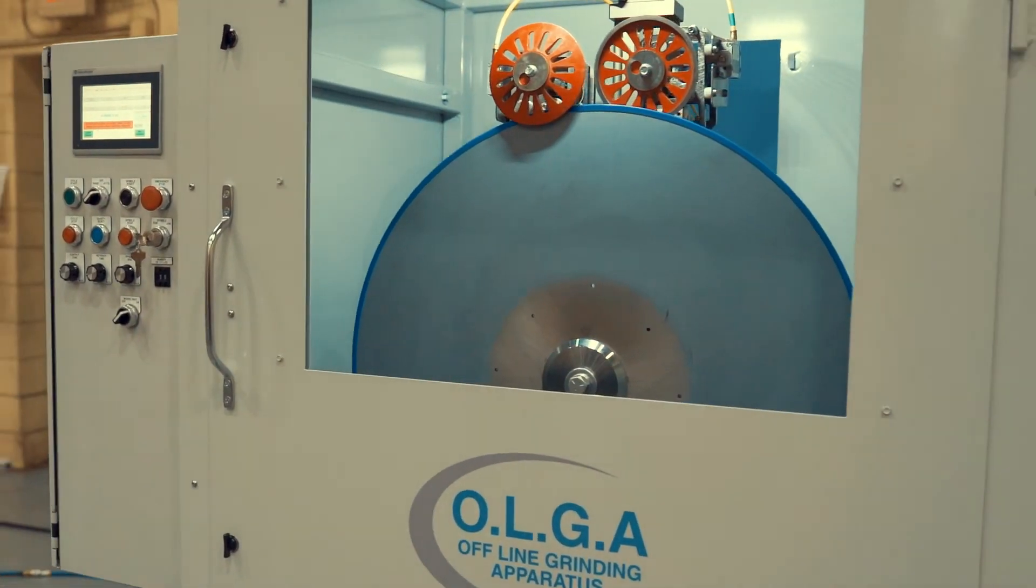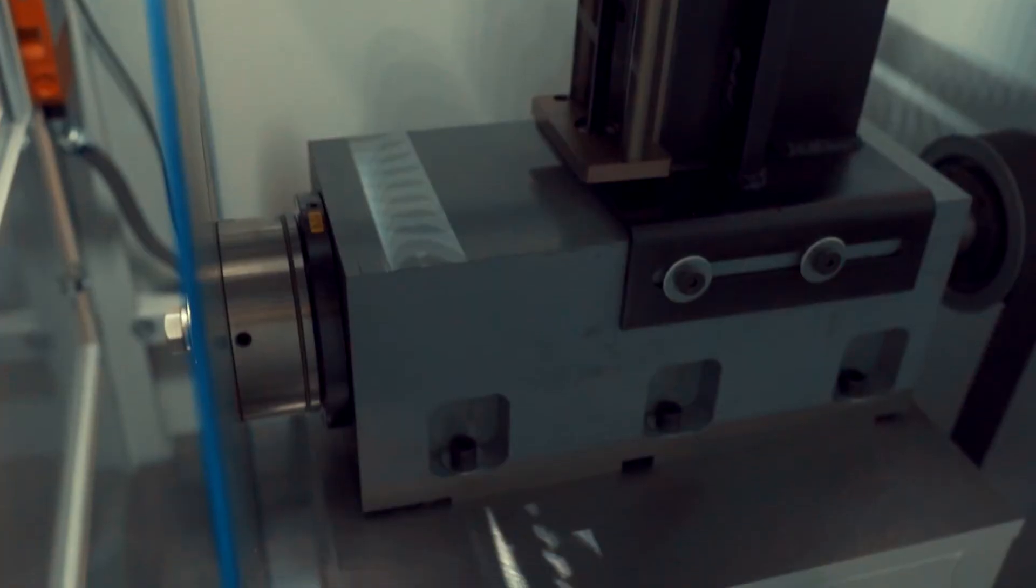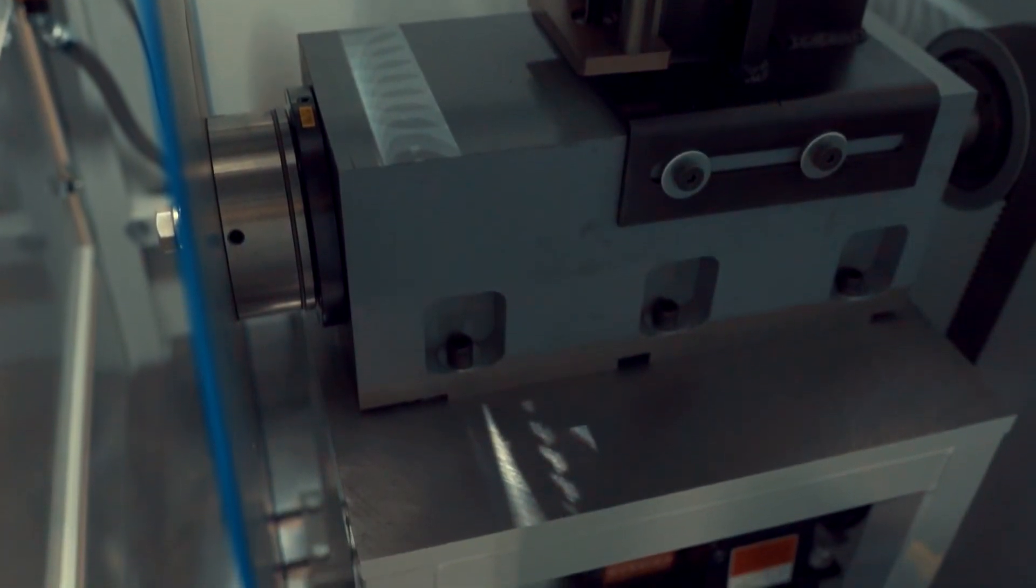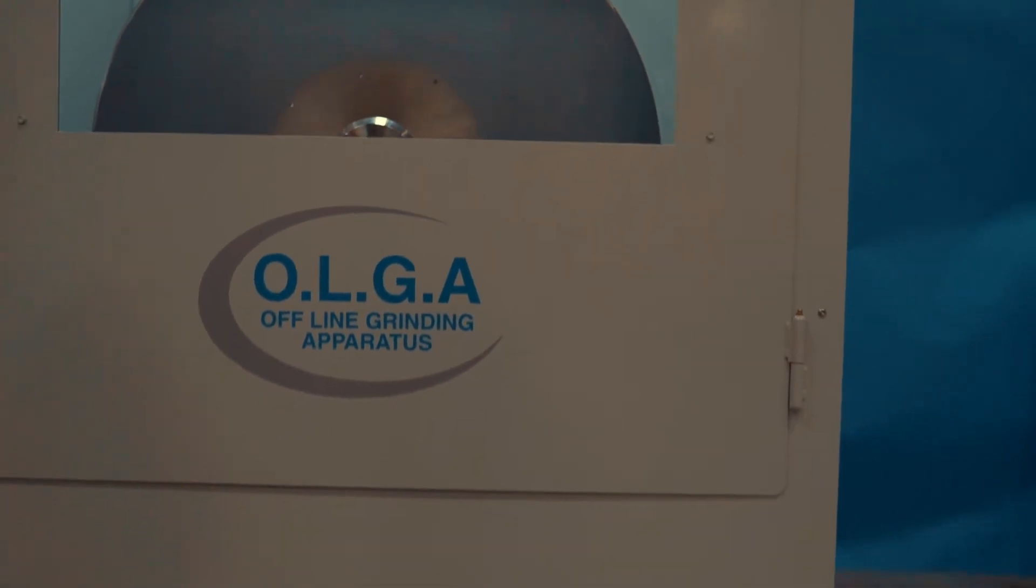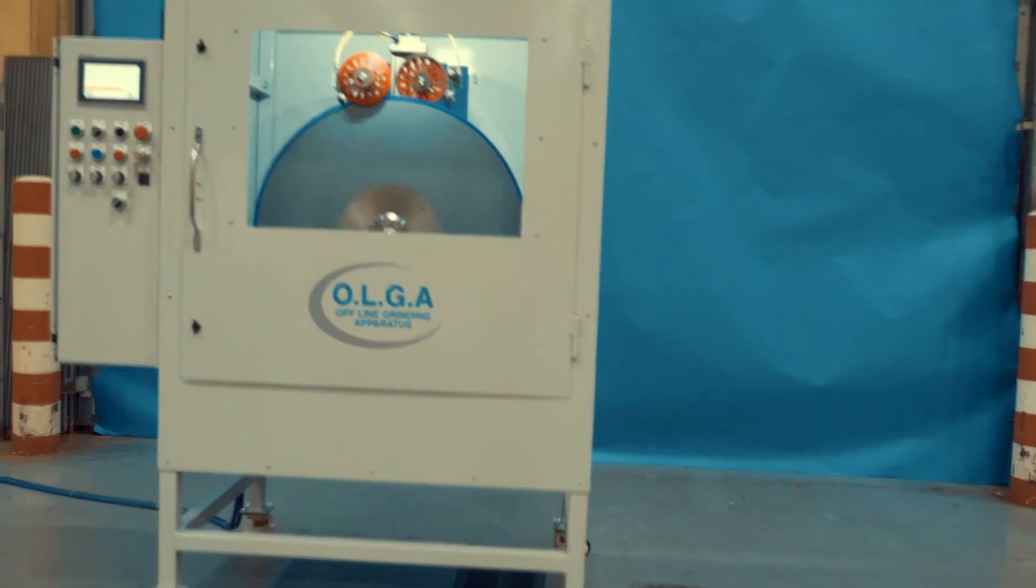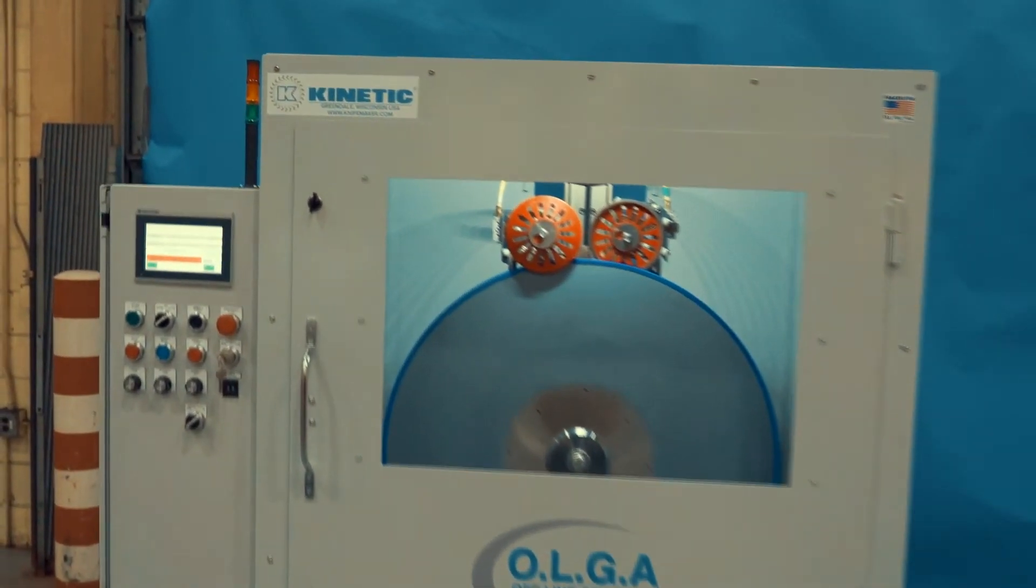The rotating hub assembly is the key to OLGA's performance and is an extremely robust precision component. Run out is featured at .0002 inch or less.